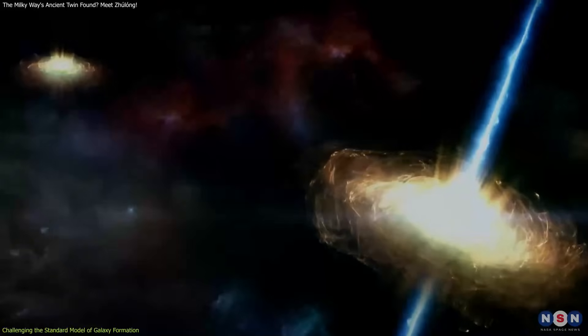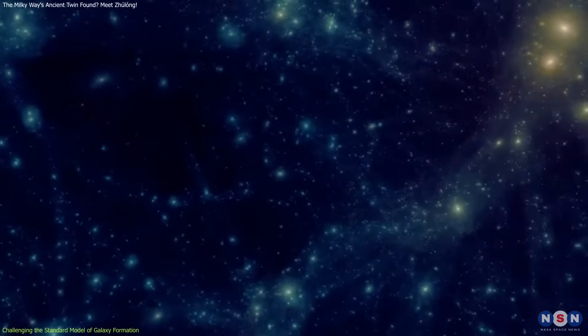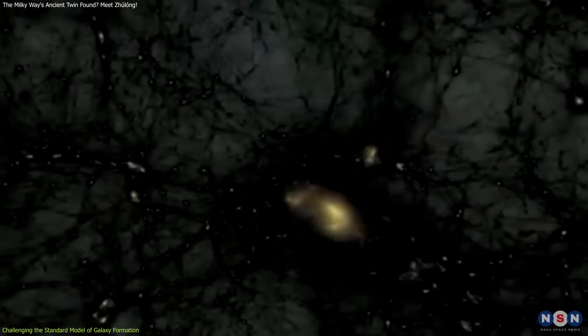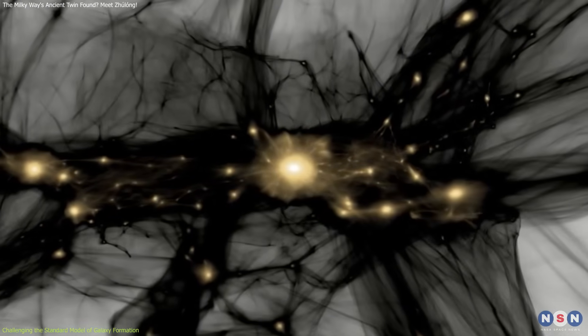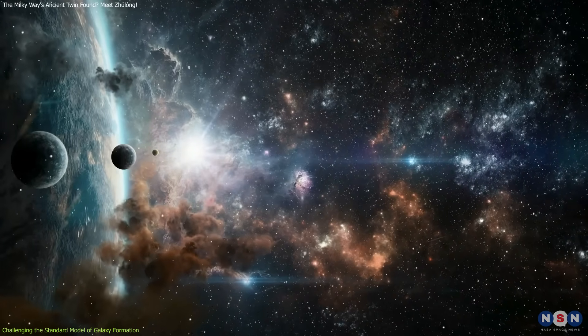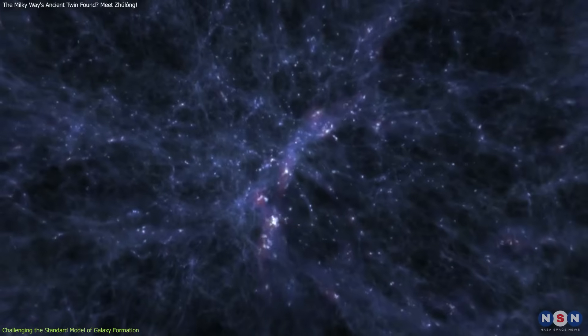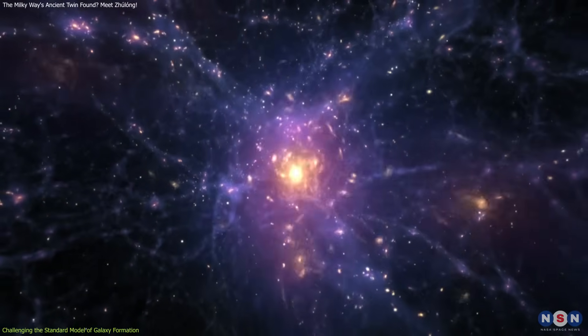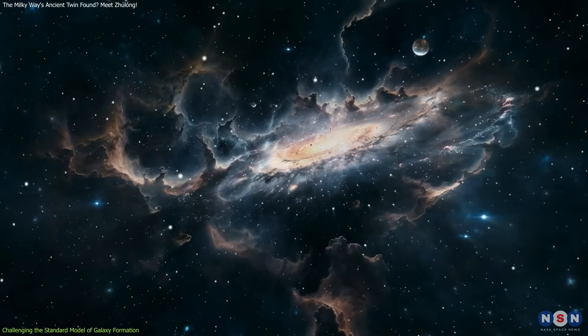One idea researchers have proposed is that the early universe might have been better at making galaxies quickly. In particular, dark matter, the invisible material that acts like the scaffolding of the universe, may have clumped together more strongly than models predicted. Around this dark matter, normal matter, what scientists call baryonic matter, which is just a fancy word for the stuff that makes up stars, planets, gas, and everything we can actually see, could have gathered faster and in bigger amounts. In short, dark matter could have acted like a giant gravitational magnet, helping normal matter pile up and form massive galaxies much earlier than we thought.